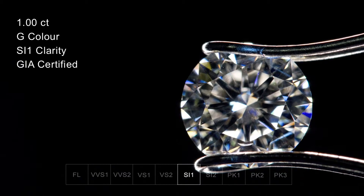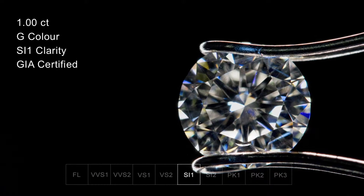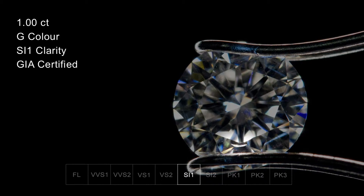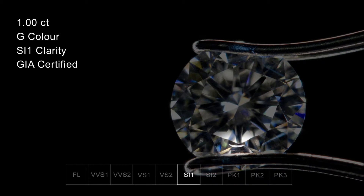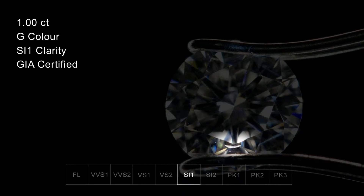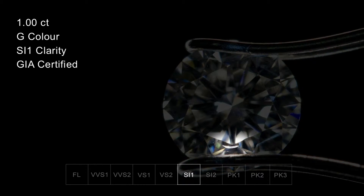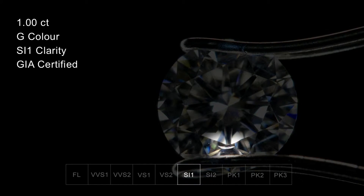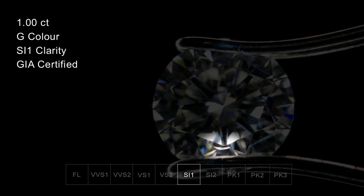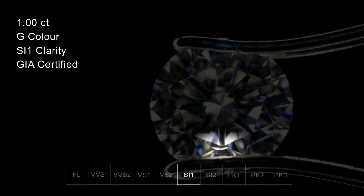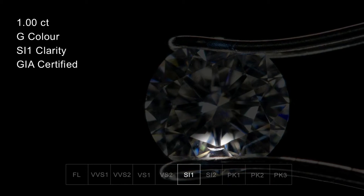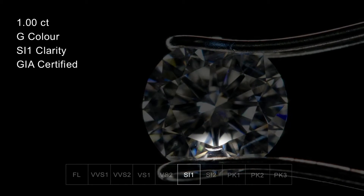Next after the VS level is SI1 and SI2. SI stands for small inclusions. Here is a classic SI1 clarity. This particular diamond contains a feather, which is a type of inclusion and is the main reason that this stone has been classified as an SI1. This is in fact quite a typical SI1 clarity. The inclusion is positioned just off what's known as the table of the diamond, which makes it less visible to the eye.